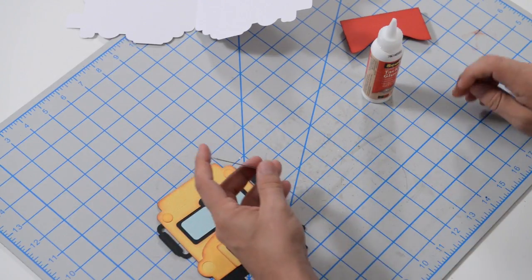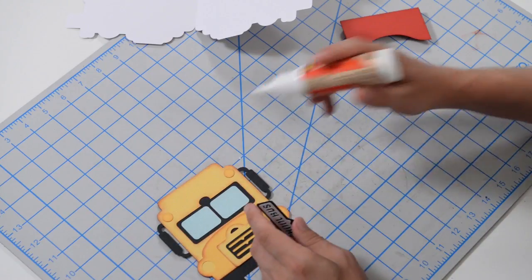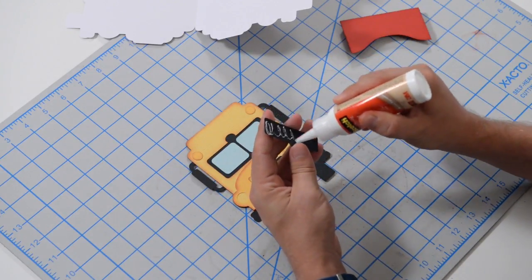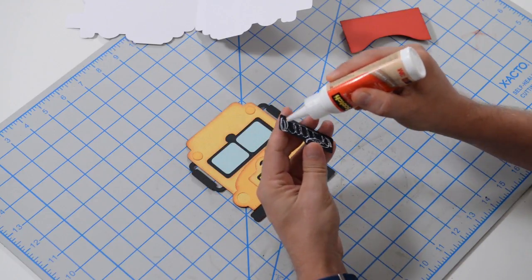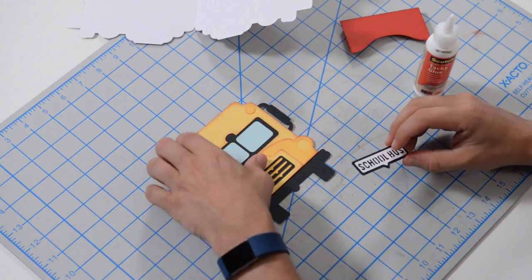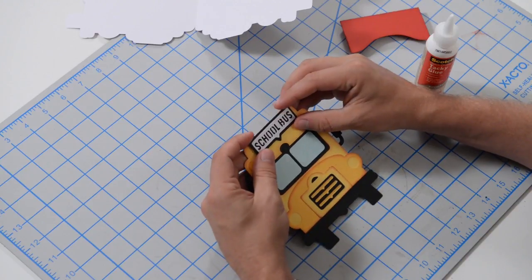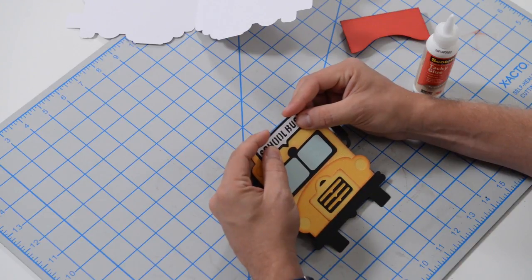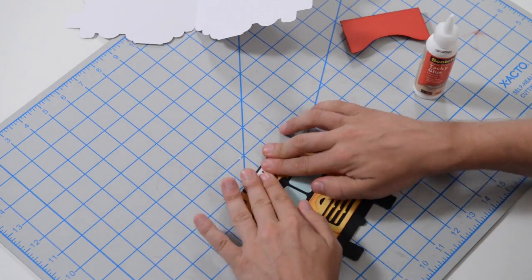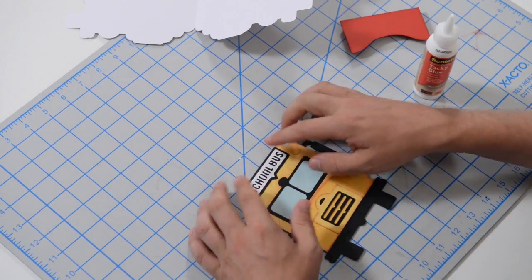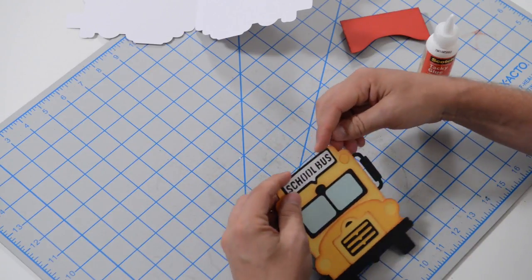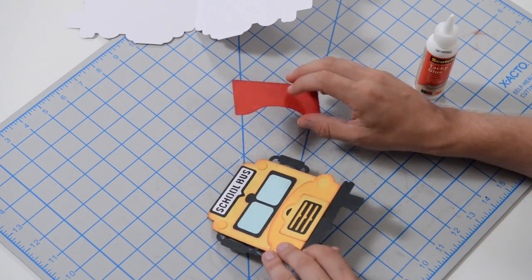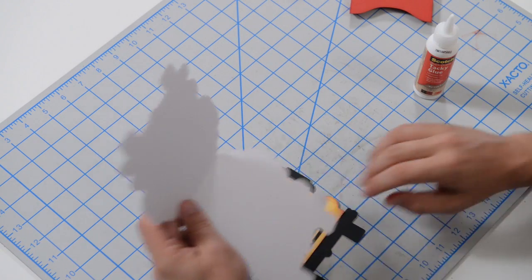Then we're going to take this and glue this flush to the top of our little bus here. So let's get our glue there. This was a very quick card. Show your bus driver some love this year with a cute little card and maybe a gift card or a note, whatever you want to do. If you're not going to give a gift card, if you just want to do a little note, then you can skip this part, obviously.